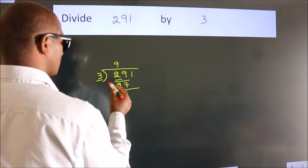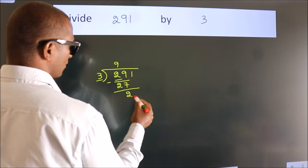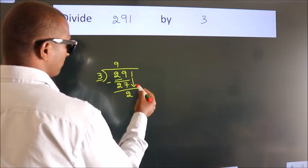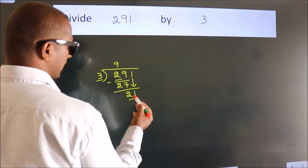Now we should subtract. We get 2. After this, bring down the beside number. So 1 down. So 21.